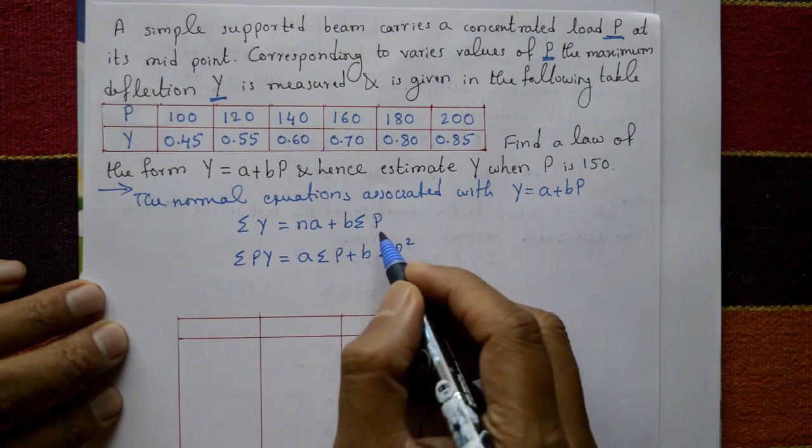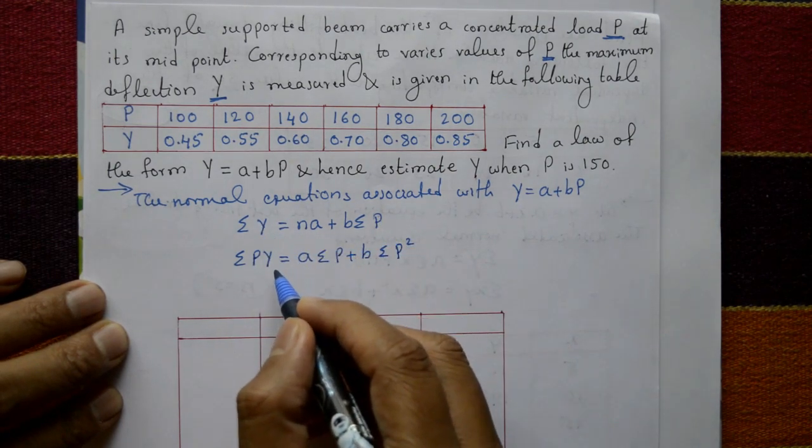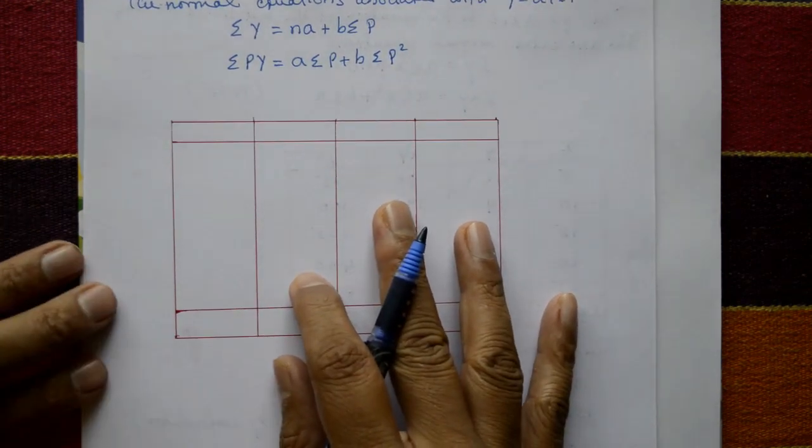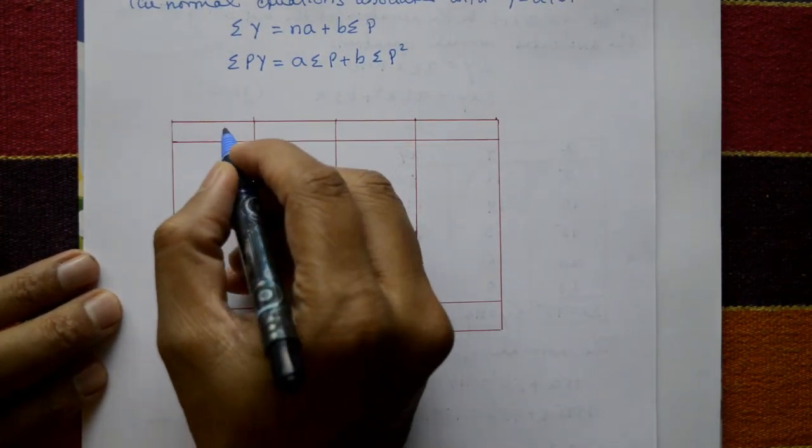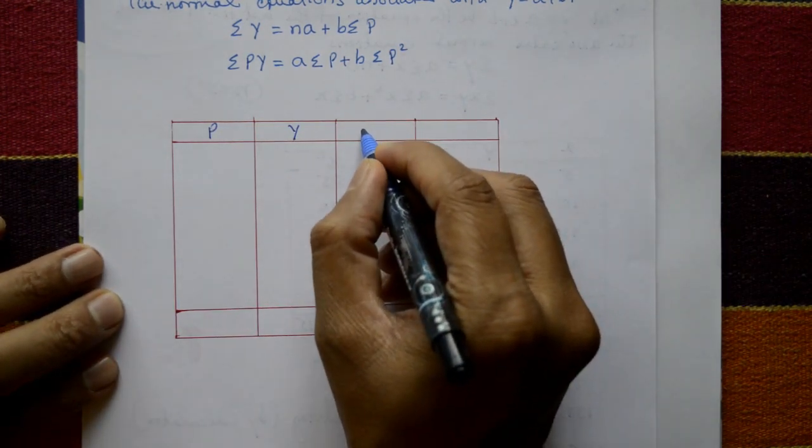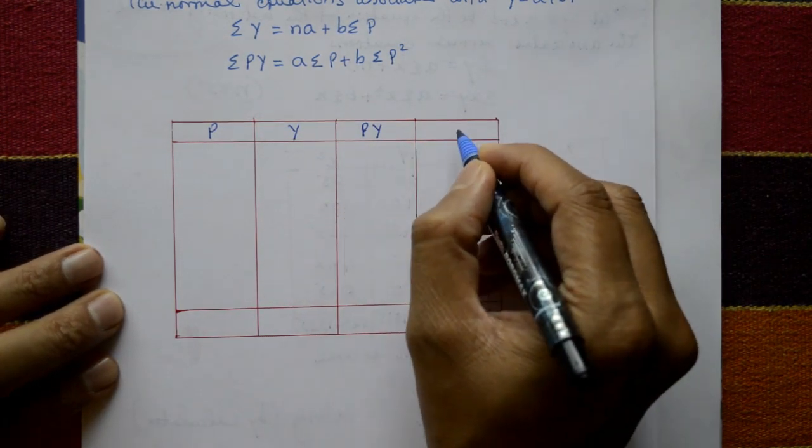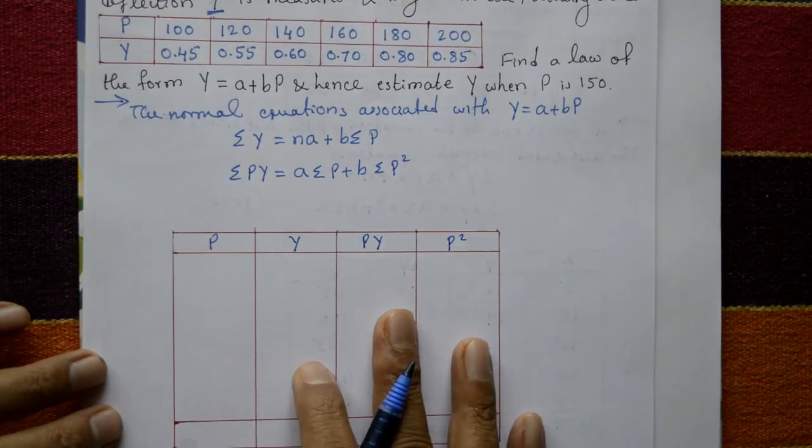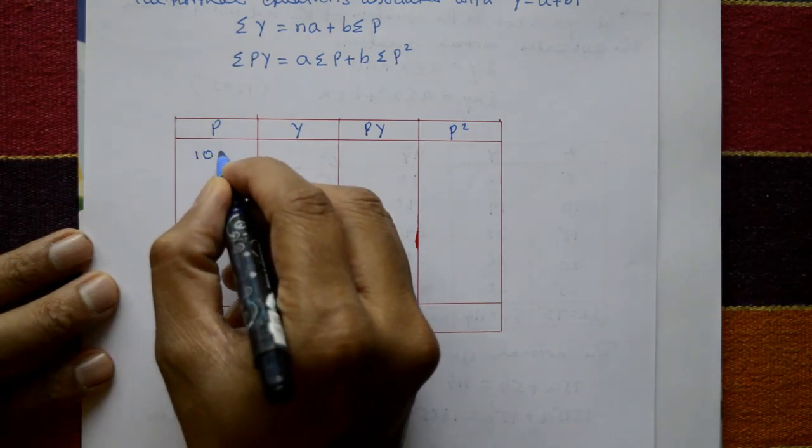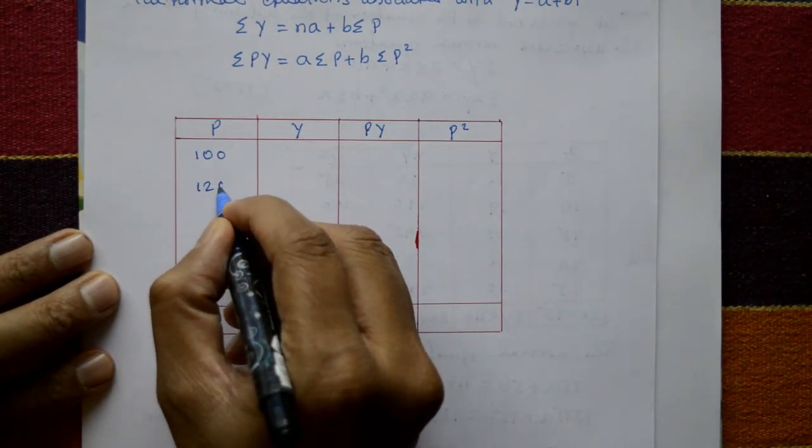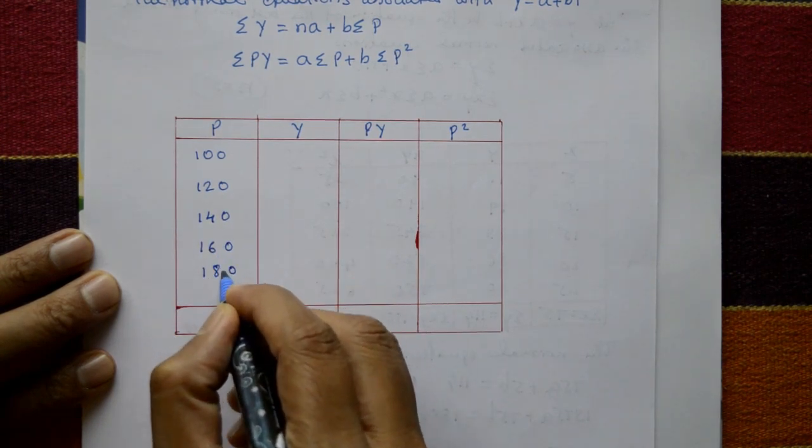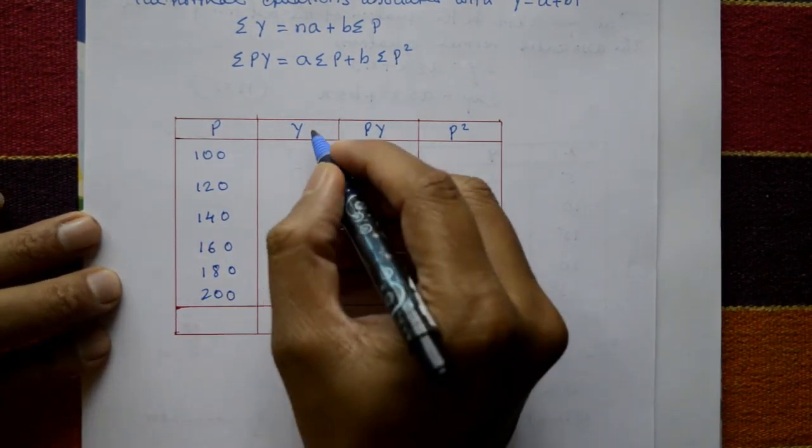Now construct a table. The table requires P, Y, PY, and P square. So write the P values: 100, 120, 140, 160, 180, and 200.